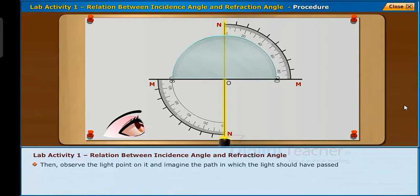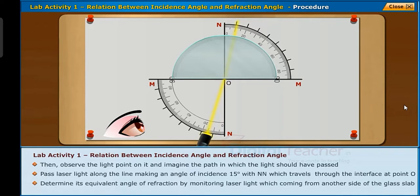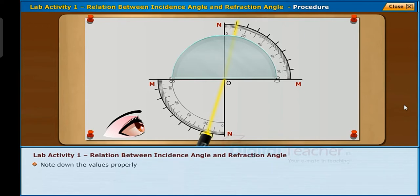Pass laser light along the line making an angle of incidence 15 degrees with NN which travels through the interface at point O. Determine its equivalent angle of refraction by monitoring the laser light coming from the other side of the glass slab. Note down the values properly.